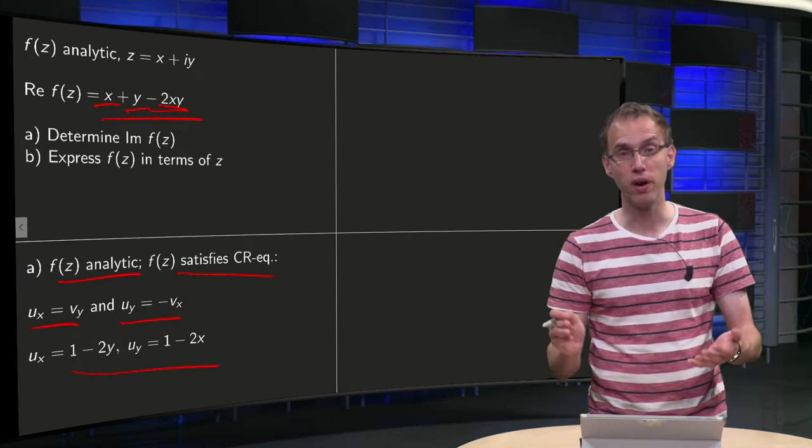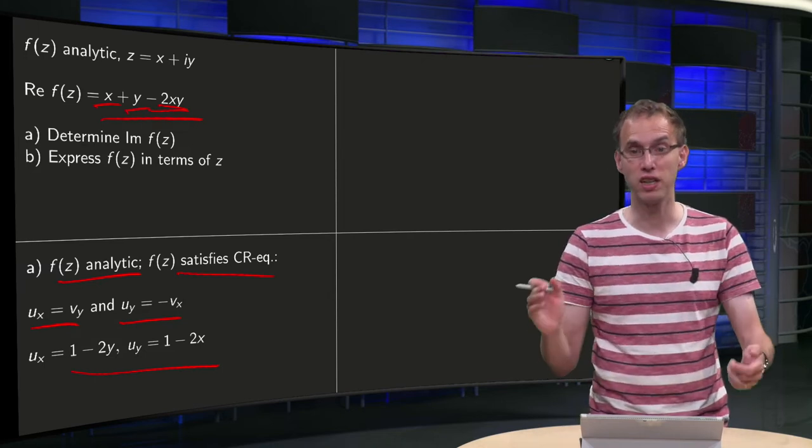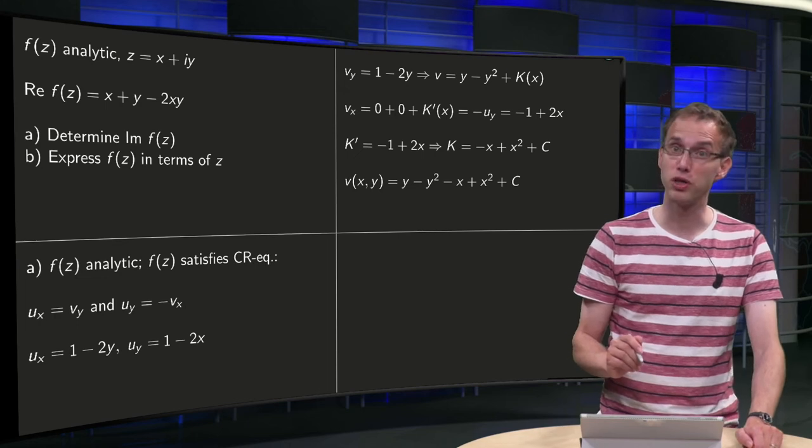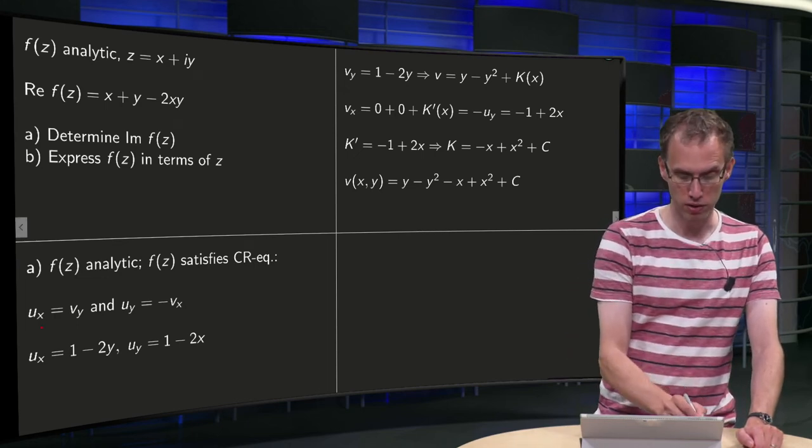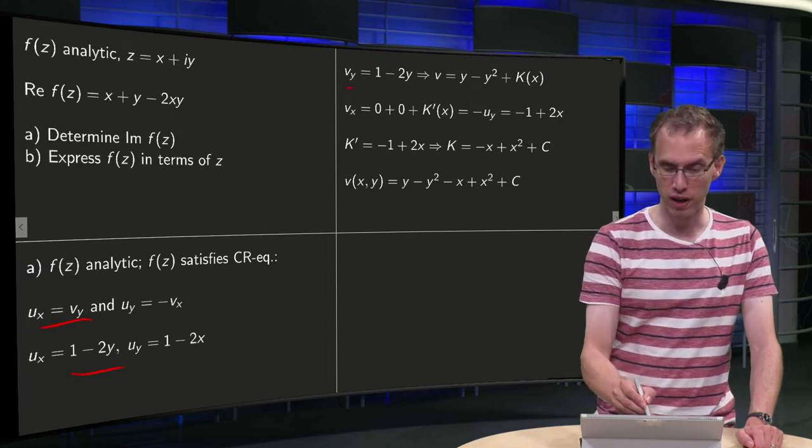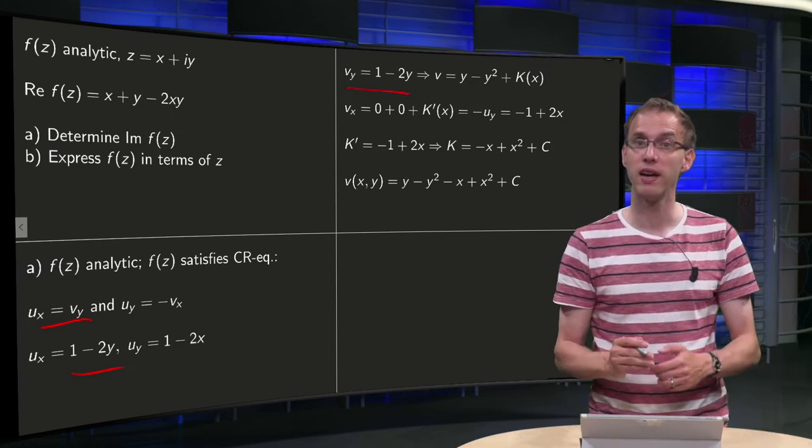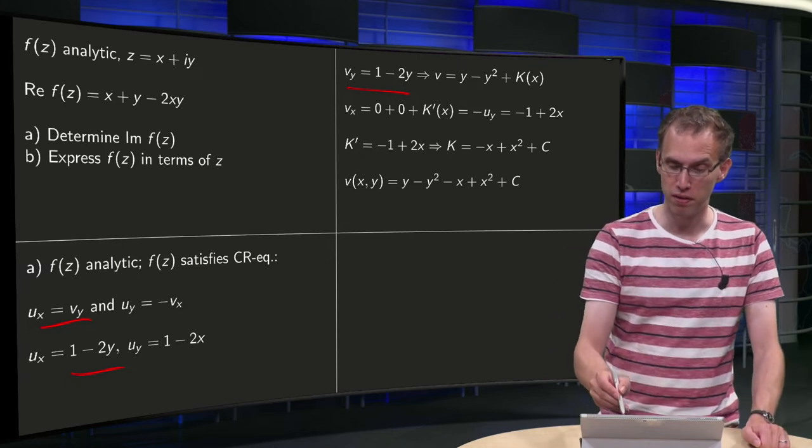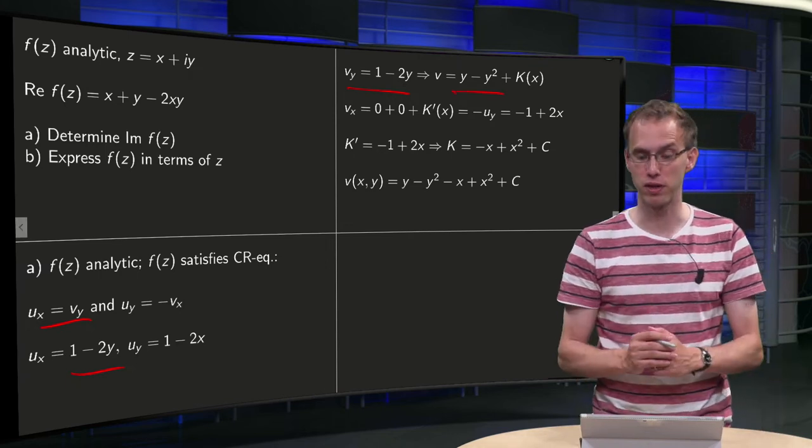So now we have ux and uy, so we can compute both vx and vy. Let's start with the first Cauchy-Riemann equation. We know ux = vy and ux = 1 - 2y, so vy = 1 - 2y. So we can integrate with respect to y, we find v = y - y² plus a constant.